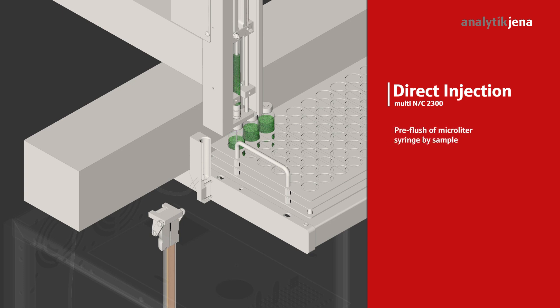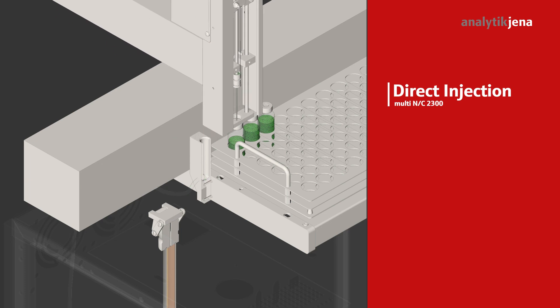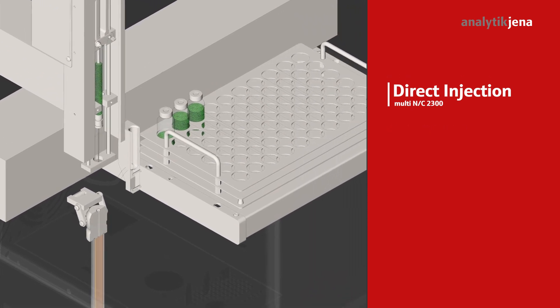The sample is directly taken up into the microliter syringe with a rinsing step included. The septum-free direct injection is done top to bottom by a wide-bore needle with complete particle transfer. No tubes and valves are needed.